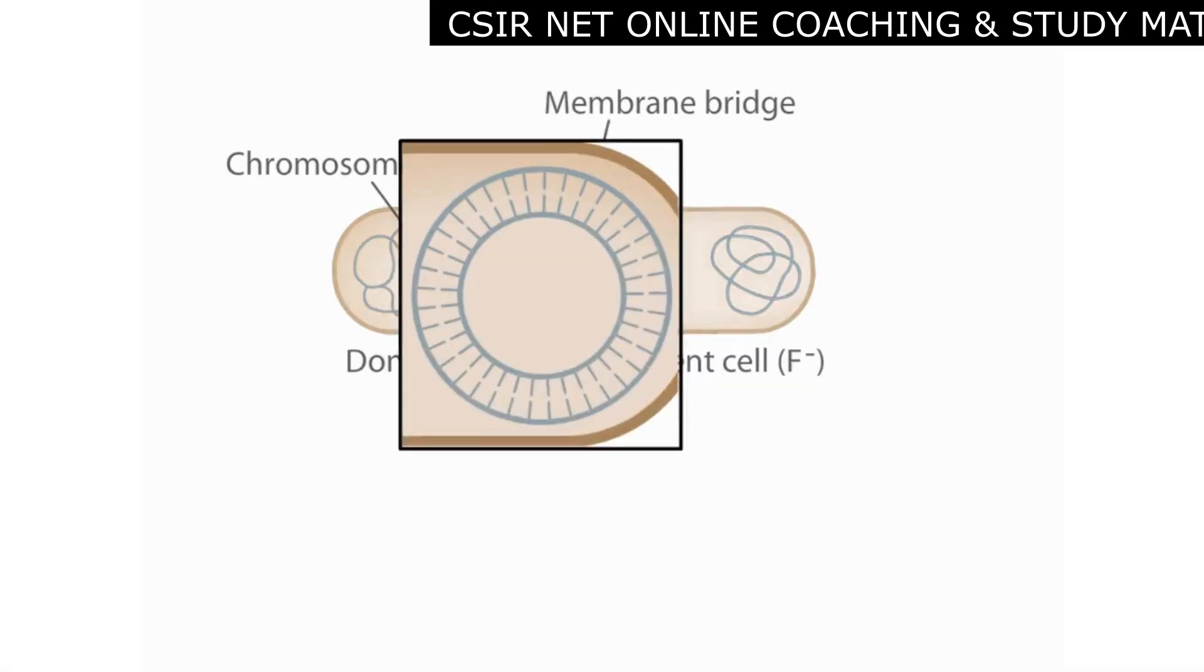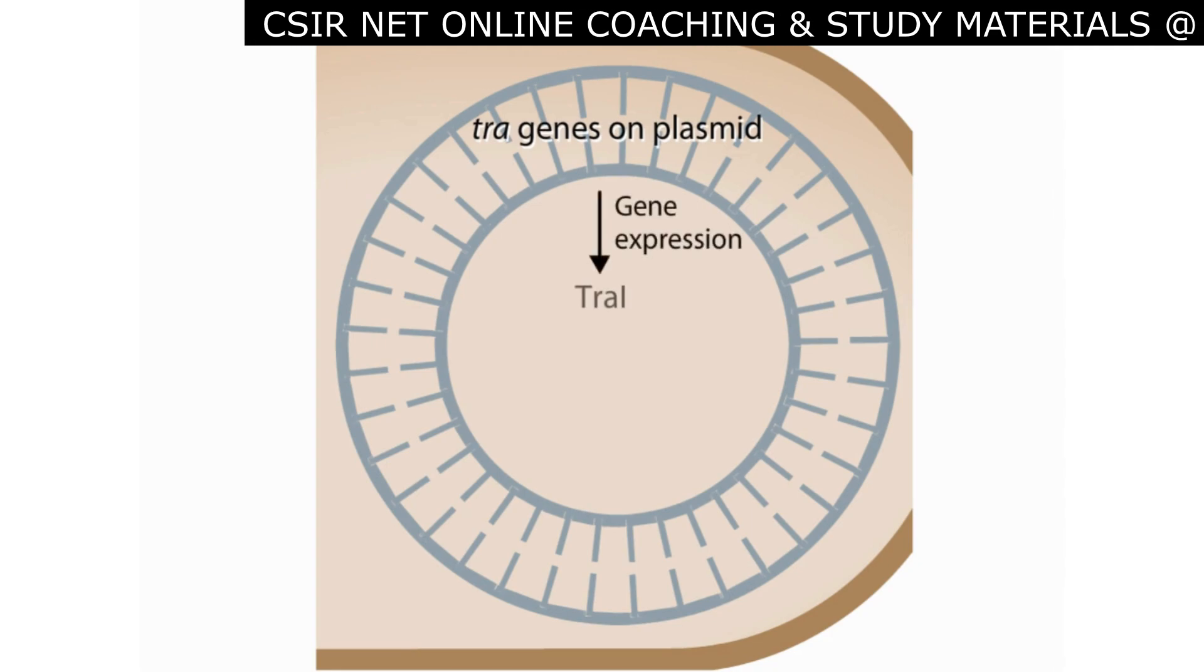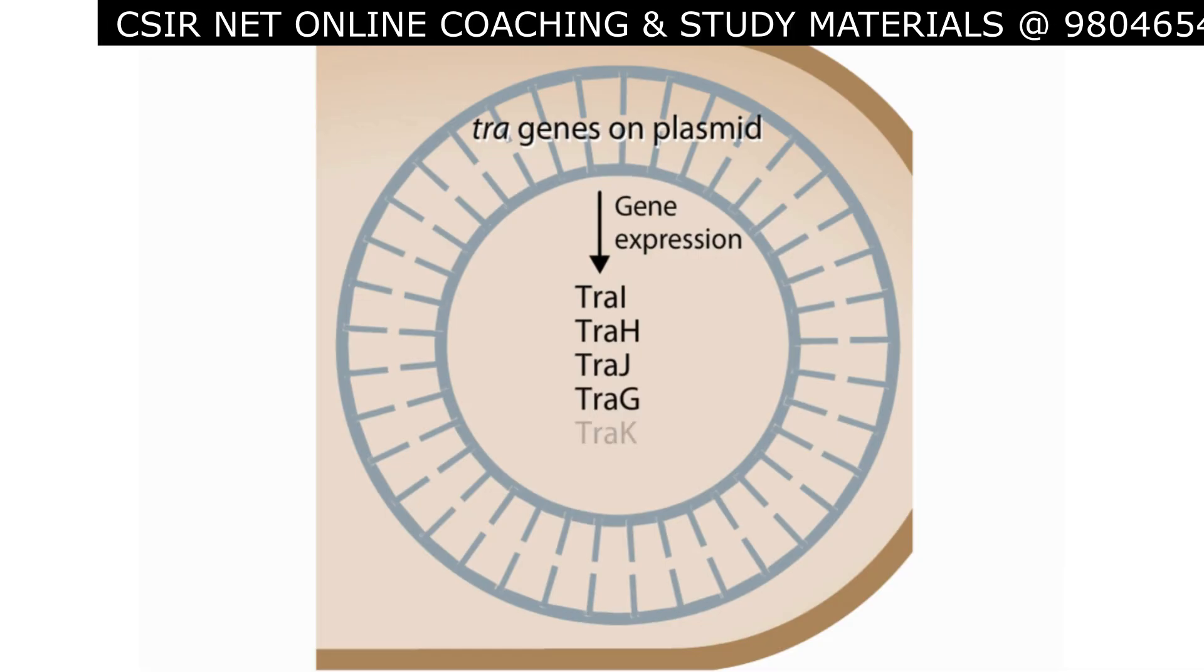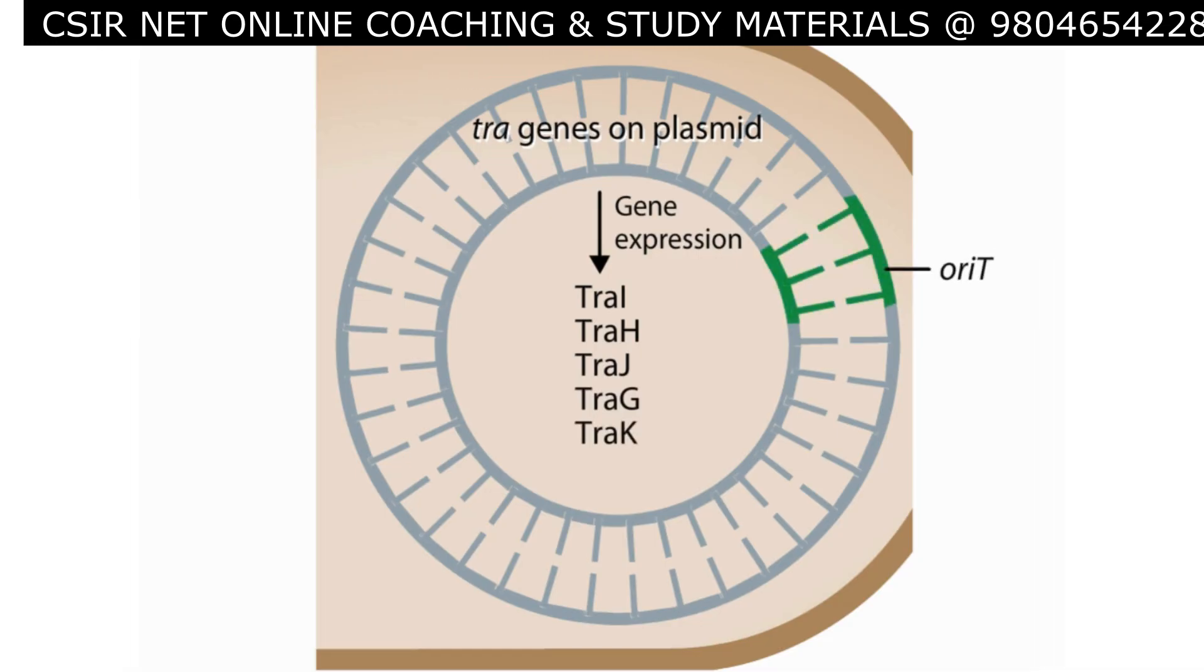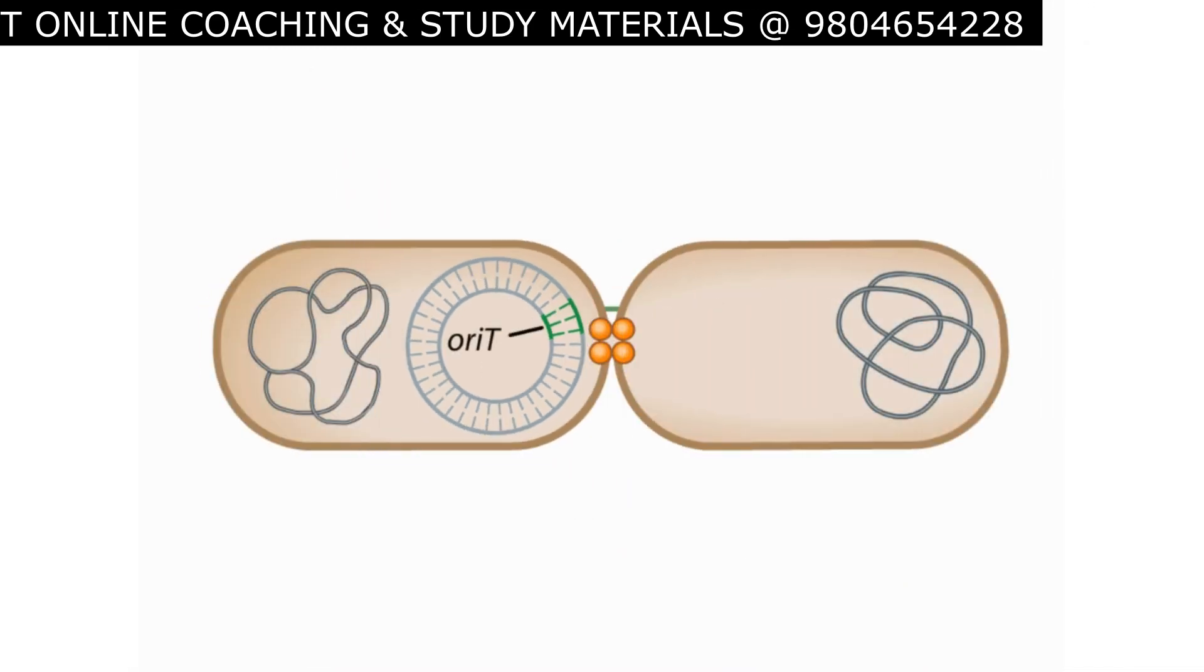The plasmid encodes a number of transfer or TRA genes whose protein products carry out transfer of DNA. The F factor also contains a site called ORI-T, for origin of transfer, where the transfer of F factor DNA begins.